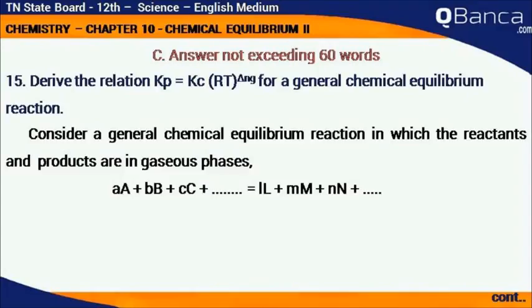Derive the relation Kp equals Kc times RT to the power delta Ng for a general chemical equilibrium reaction. Consider a general chemical equilibrium reaction in which the reactants and products are in gaseous phases: aA plus bB plus cC plus etc. equals lL plus mM plus nN plus etc.